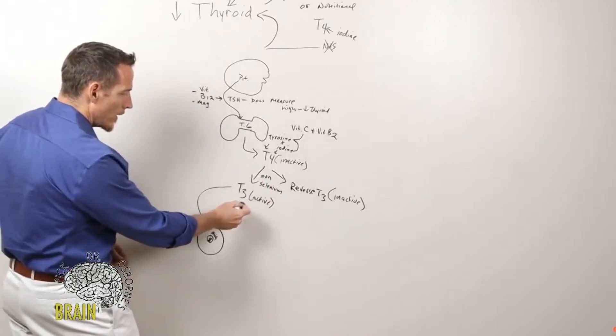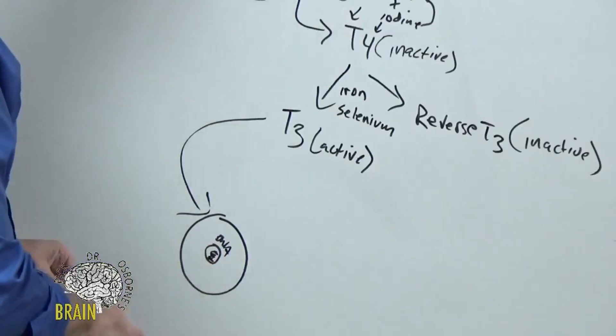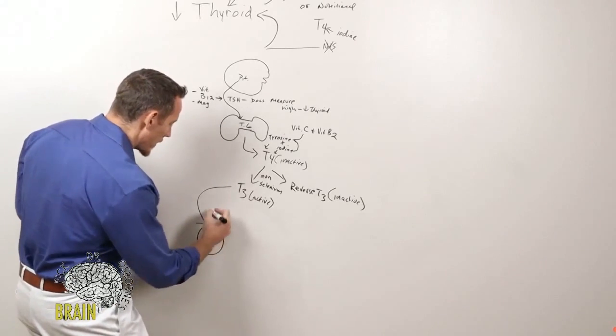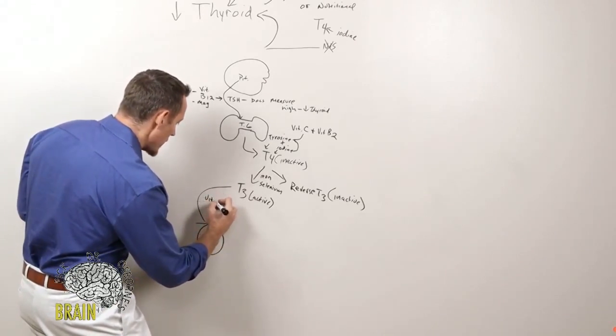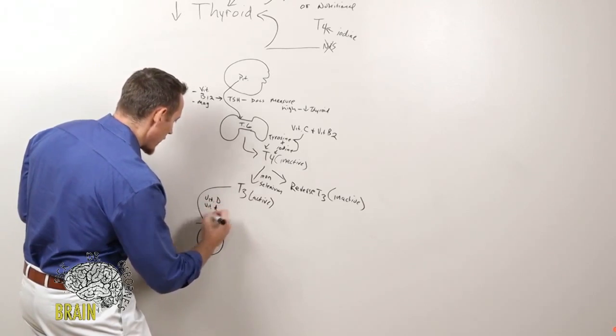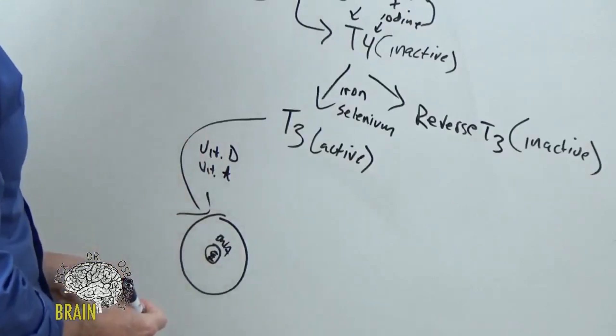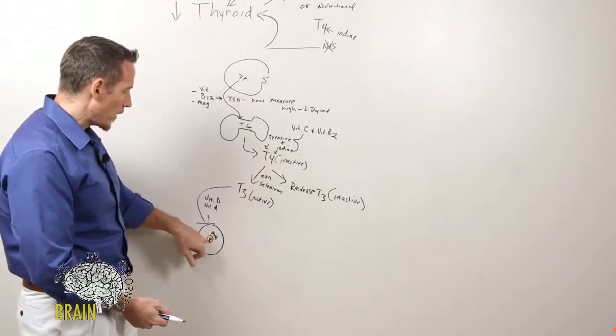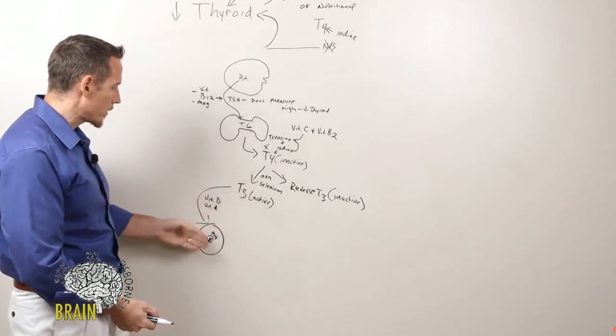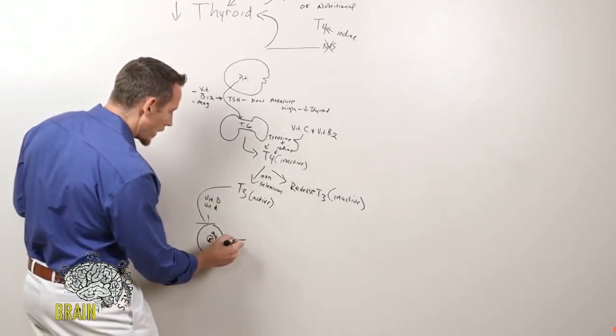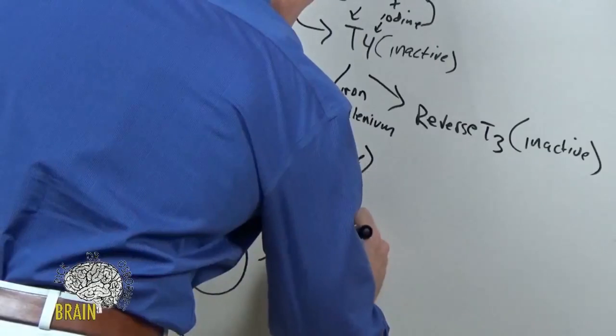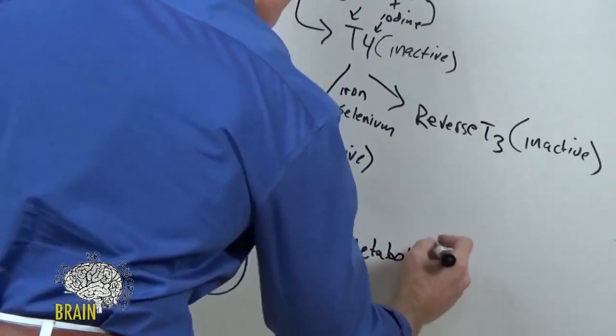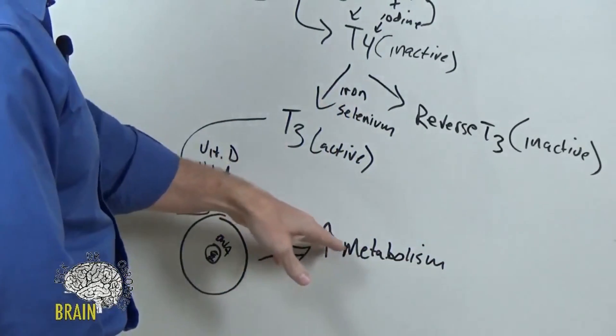But it still has to communicate to your DNA. Thyroid hormone has to communicate to your DNA. It doesn't just magically improve or speed up your metabolism. To communicate to the DNA requires vitamin D, but it also requires vitamin A. These two nutrients help to form an antenna on the surface of the nucleus of a cell that bind T3 so that T3 can talk to the DNA. When T3 talks to the DNA, what happens now is an increase in your metabolism. And that's why people that don't have enough thyroid have low or slow metabolisms.